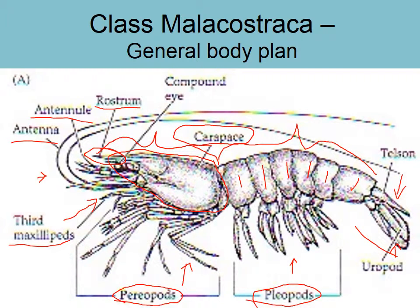Crustaceans also have compound eyes — like a fly's eye or a spider's eye — where lots of little individual eyes are put together.